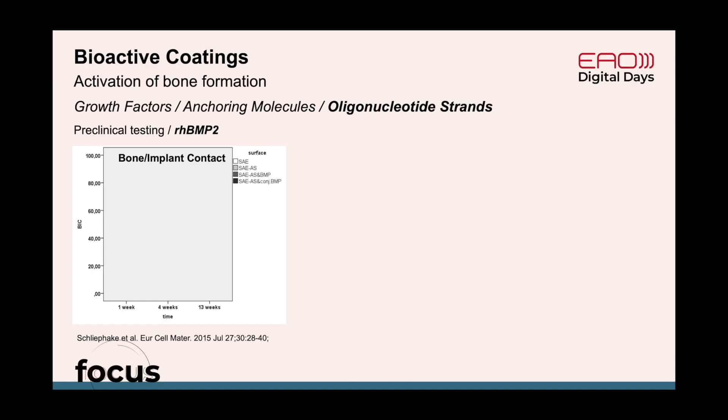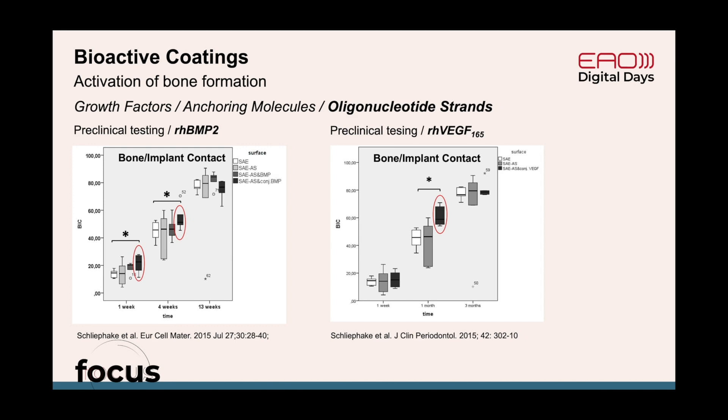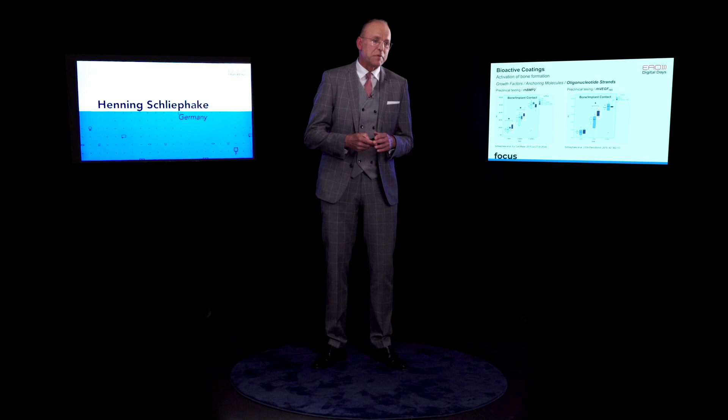Looking at bone implant contact — still the gold standard for evaluation of osteointegration — we observed different effects after 1, 4, and 13 weeks. The specifically anchored BMPs accomplished a significant increase in bone implant contact after 1 week and after 4 weeks, but after 13 weeks there was no significant difference anymore. VEGF-coated implant surfaces showed a significantly increased bone implant contact after 4 weeks. However, considering these small animal models and the rather minor effects in terms of bone implant contact, it may be that we would not be able to really move forward in a clinical scenario.